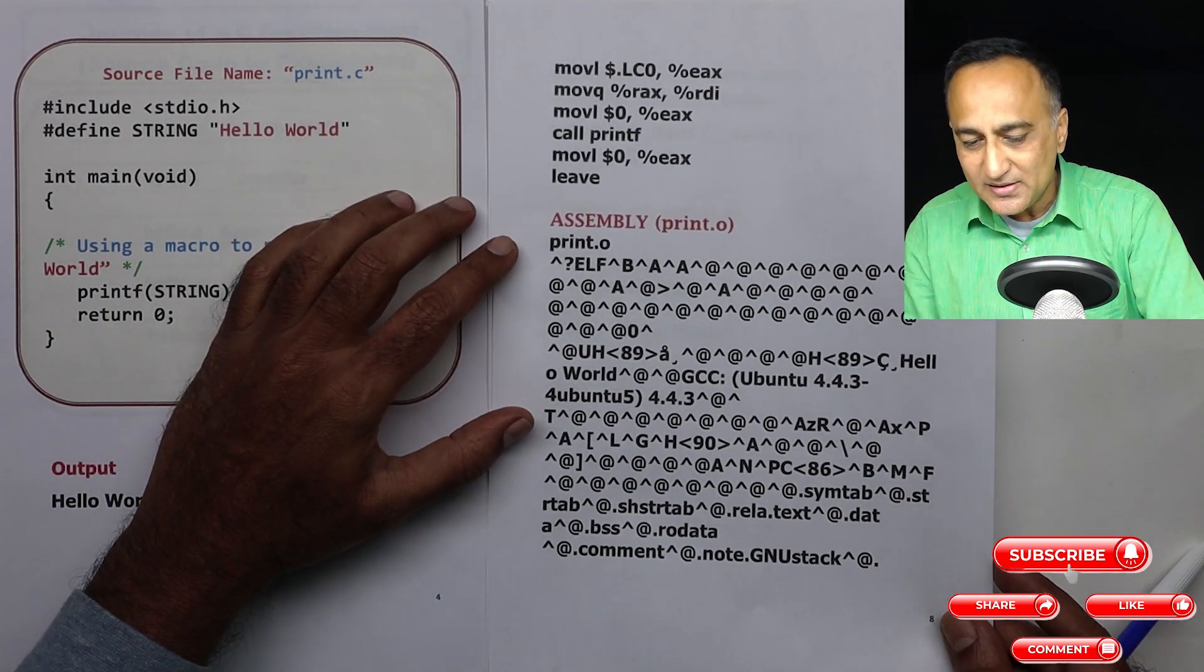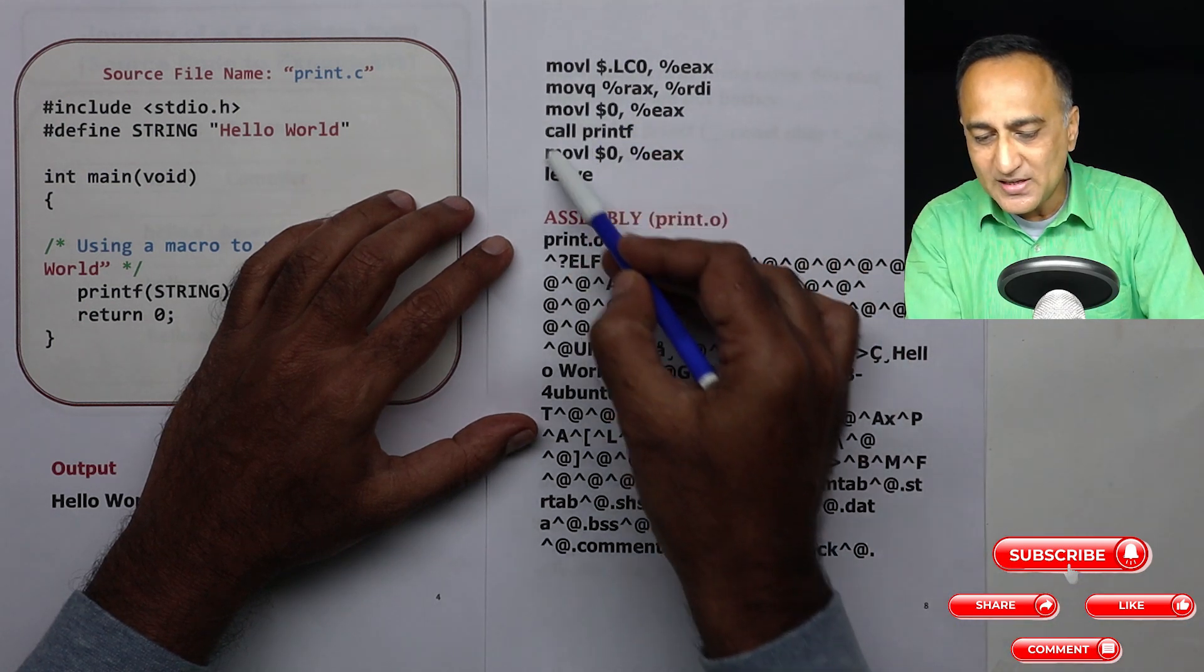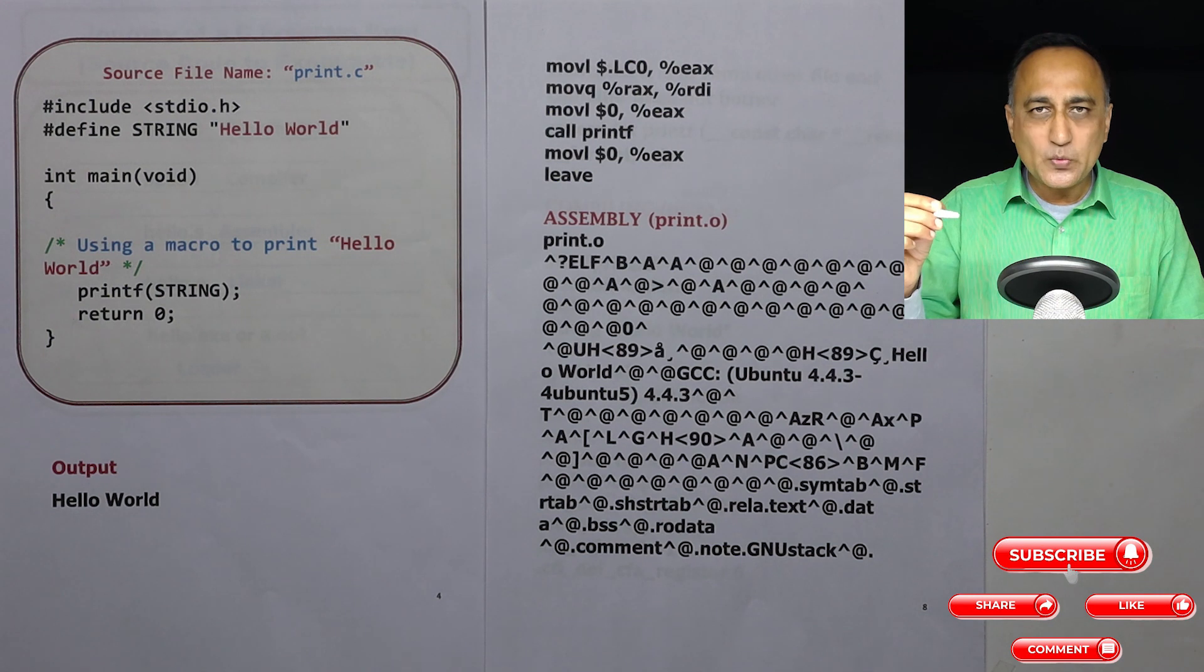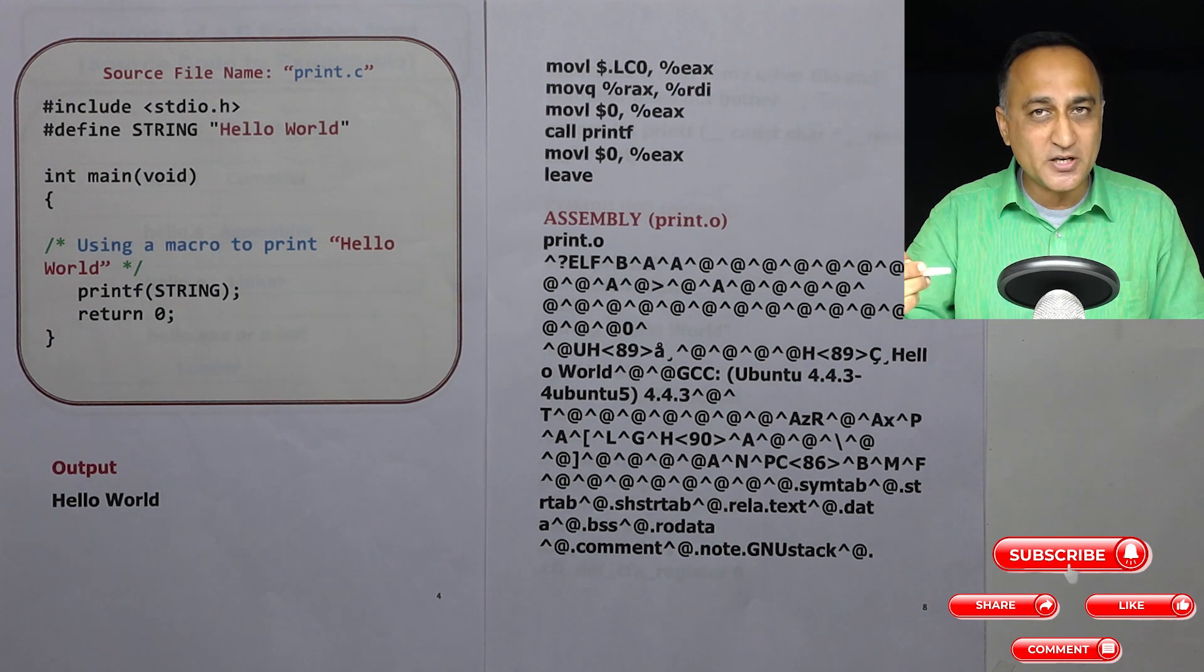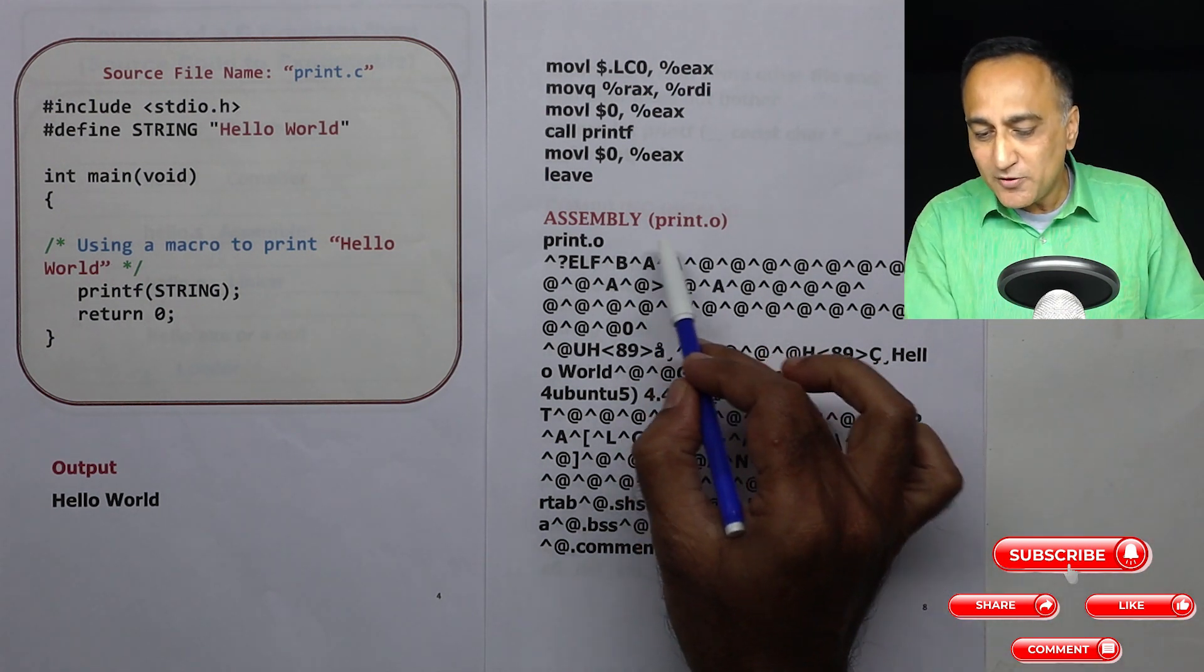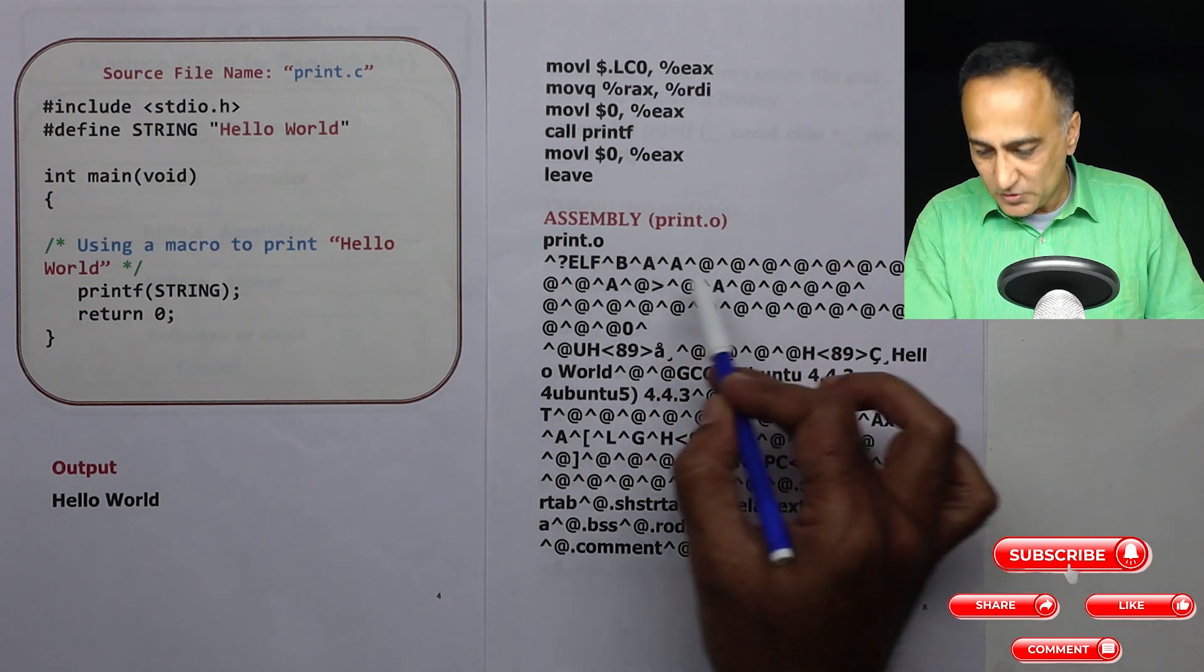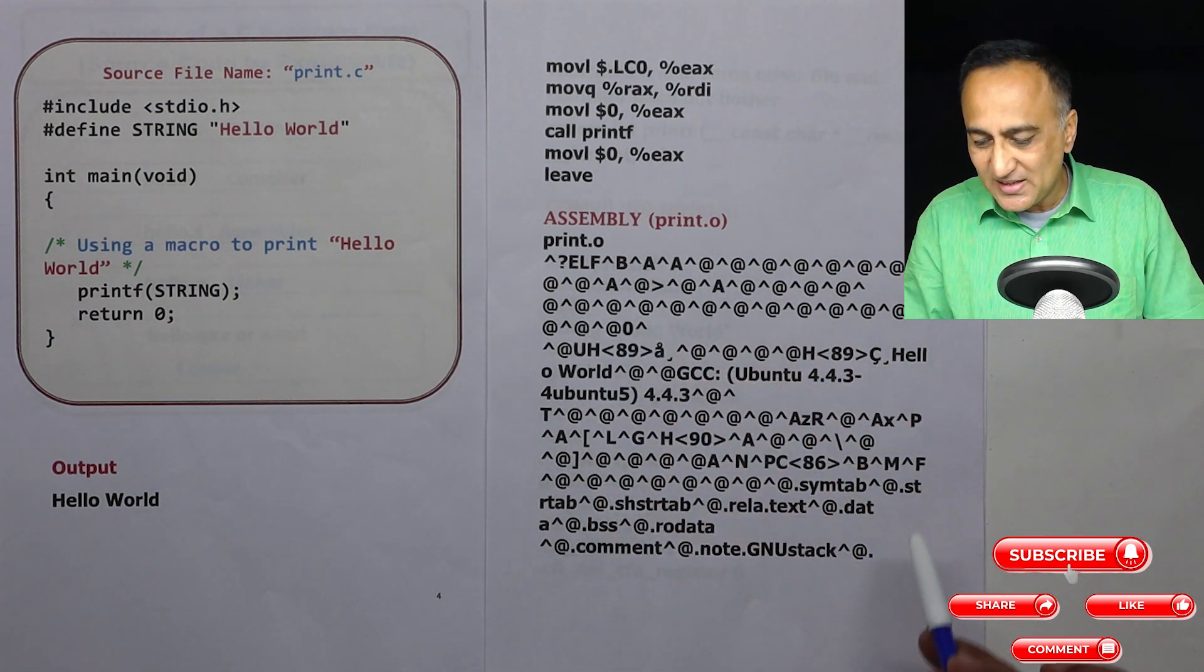So this is all example of your assembly language code. You can further look at it here. This is again the continuation of the assembly language code. Now this print.s when it is passed on to the software called assembler, the assembler converts it from assembly language onto object code. So the name of the file now changes after processing by assembler is print.o.